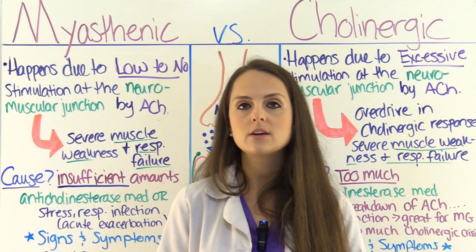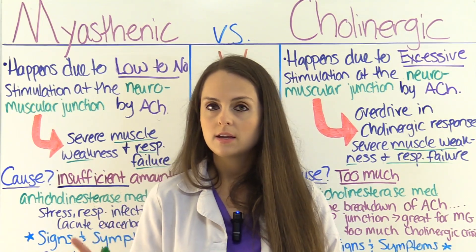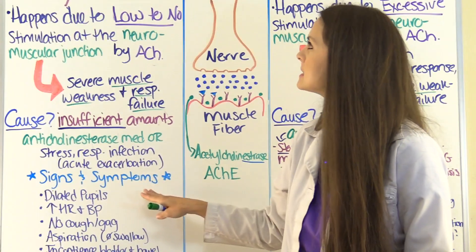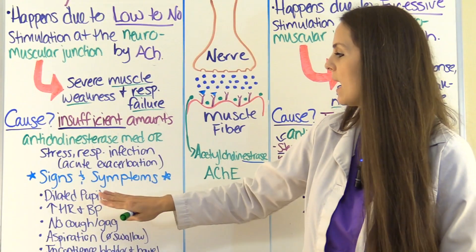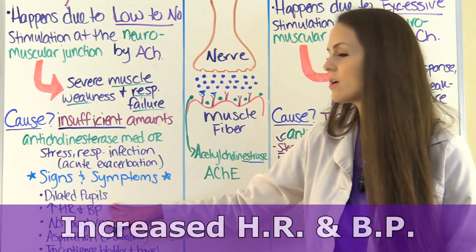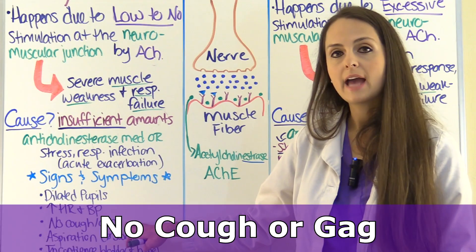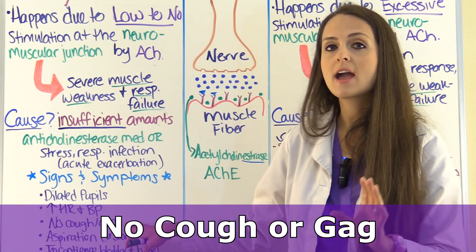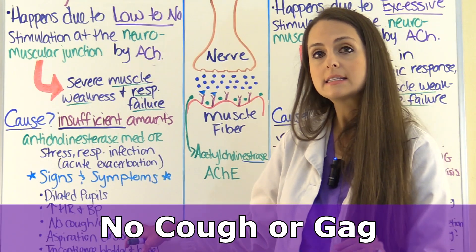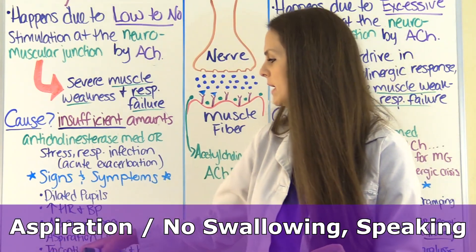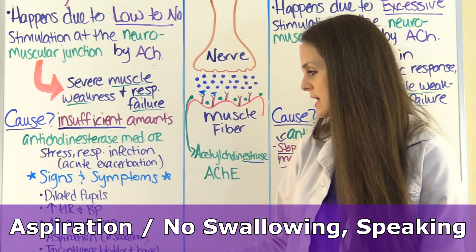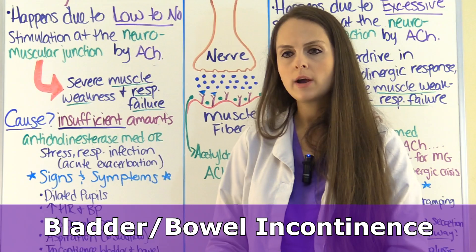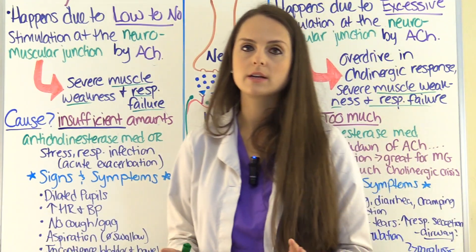Even though they share muscle weakness and respiratory failure in the end, they have some signs and symptoms that differ. In myasthenic crisis: dilated pupils, increased heart rate, increased blood pressure, no cough or gag reflex — those muscles responsible for coughing, gagging, and swallowing are severely weak because they're getting no signals to contract. The patient is also at risk for aspiration, cannot swallow or speak, and may have incontinence of the bowel and bladder.